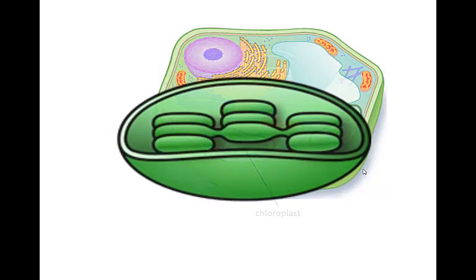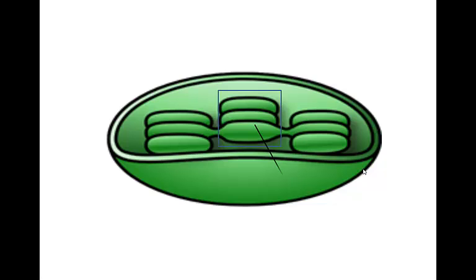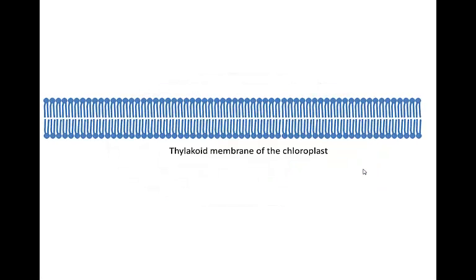Inside the chloroplast, folds of membrane form compartments called thylakoids. The thylakoid membrane encloses the thylakoid space and separates it from the surrounding stroma.